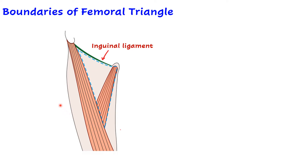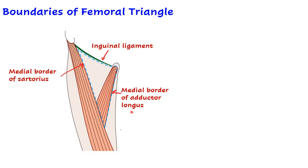Let us see the lateral and medial boundaries. The muscle on the lateral side is sartorius, and the muscle on the medial side is adductor longus. The lateral boundary is formed by the medial border of sartorius. The medial boundary is formed by the medial border of adductor longus. This is important to remember - it is the medial border, not the lateral border, because adductor longus also forms the floor of the triangle. Students often make a mistake here.